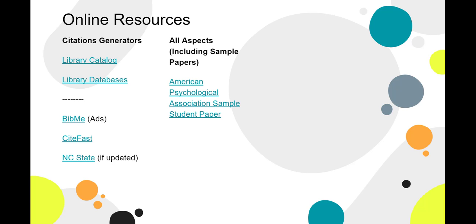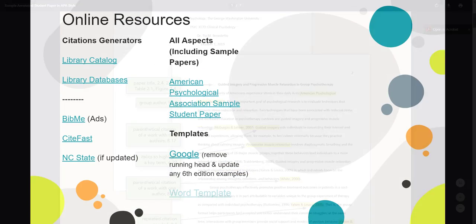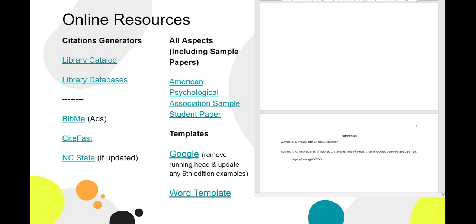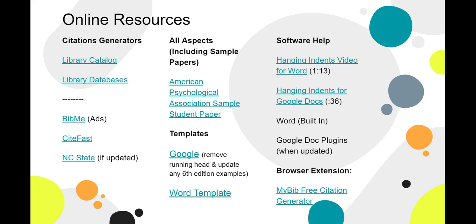You can find numerous websites that include directions and examples for all aspects of APA style. The one we included here goes to a sample paper, so you can see what it looks like. Templates can help you with formatting — just make sure they've been updated to 7th edition, or double-check the format using the checklist and handouts we provide. You can find videos on YouTube that can help you, such as how to create hanging indents on your reference page. Word and Google Docs have features that can help you too. There are also browser extensions that you may find helpful, such as My Bib.